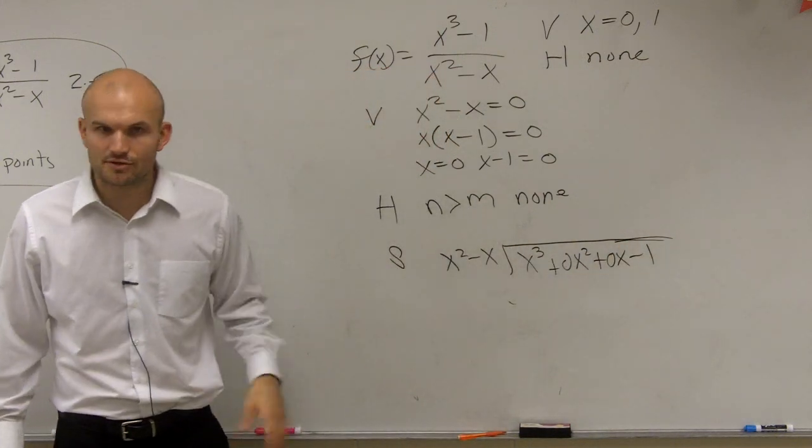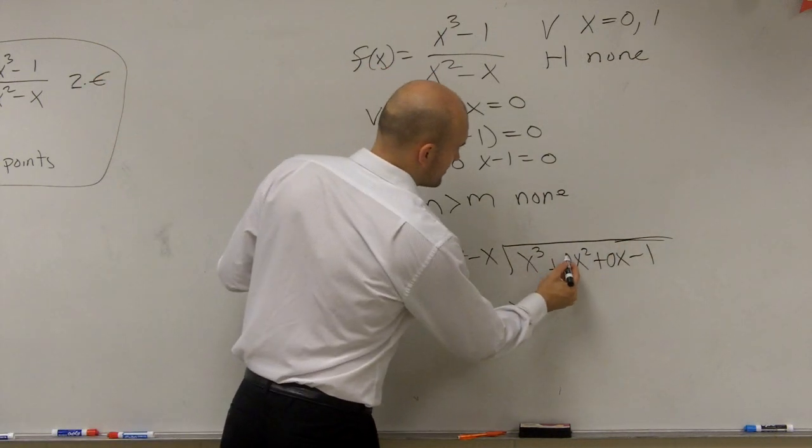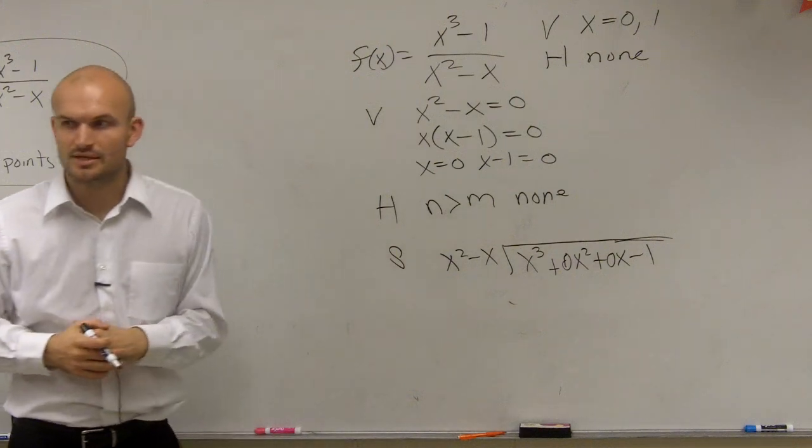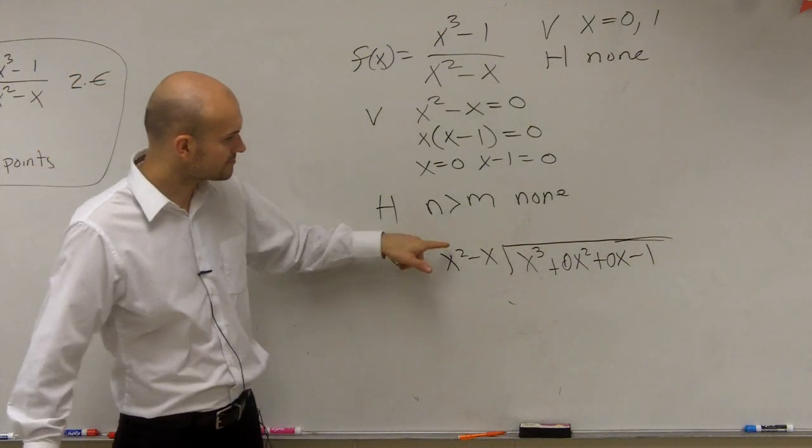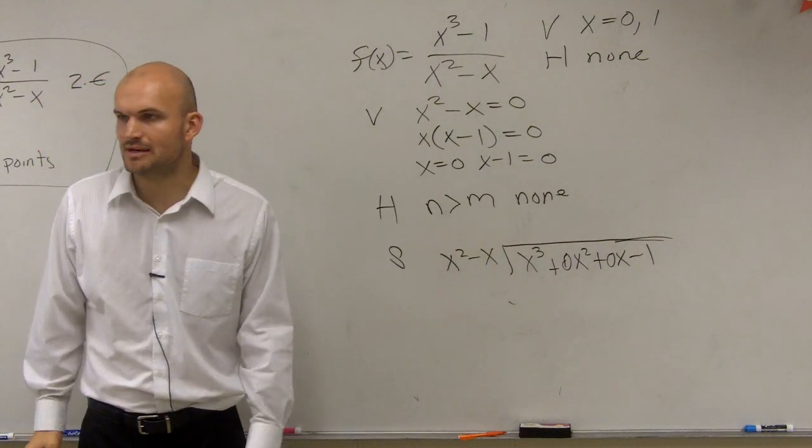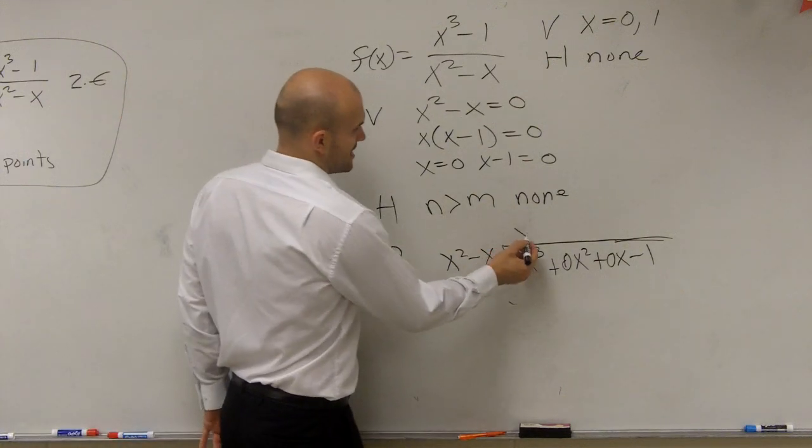I'm going to put the zeros as placeholders. Remember when I first did long division? It helps. So you guys don't make mistakes. So x squared goes into x cubed how many times? x times, right?